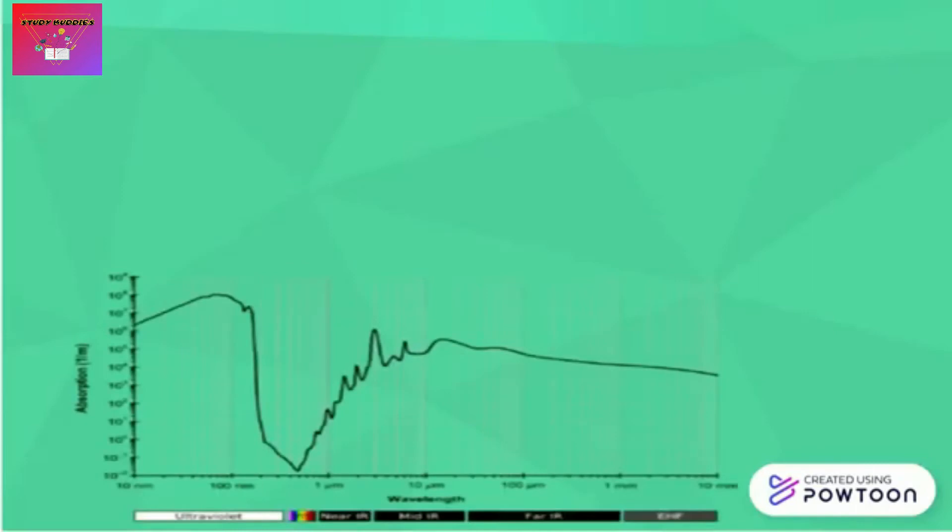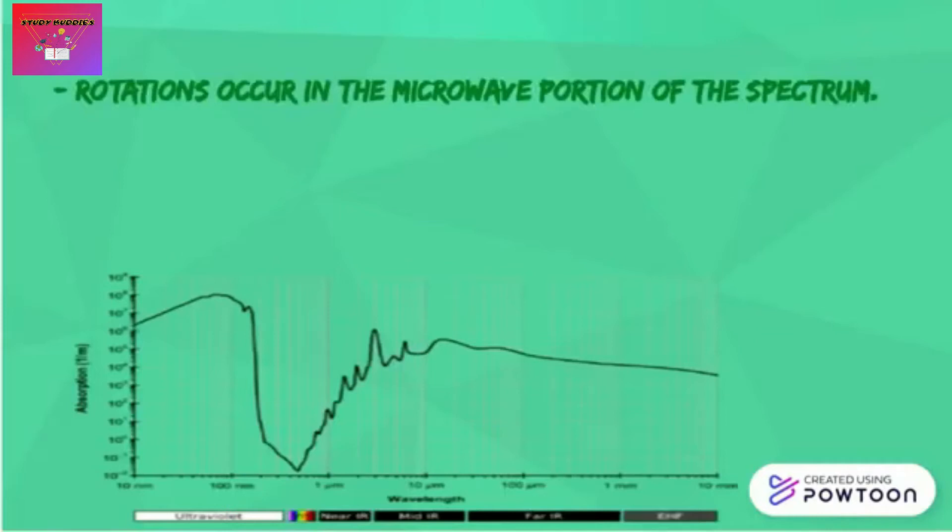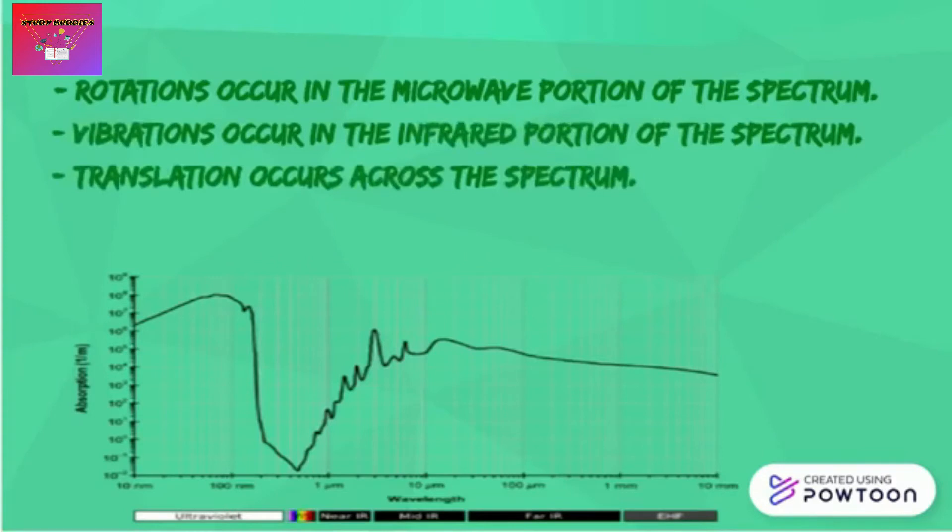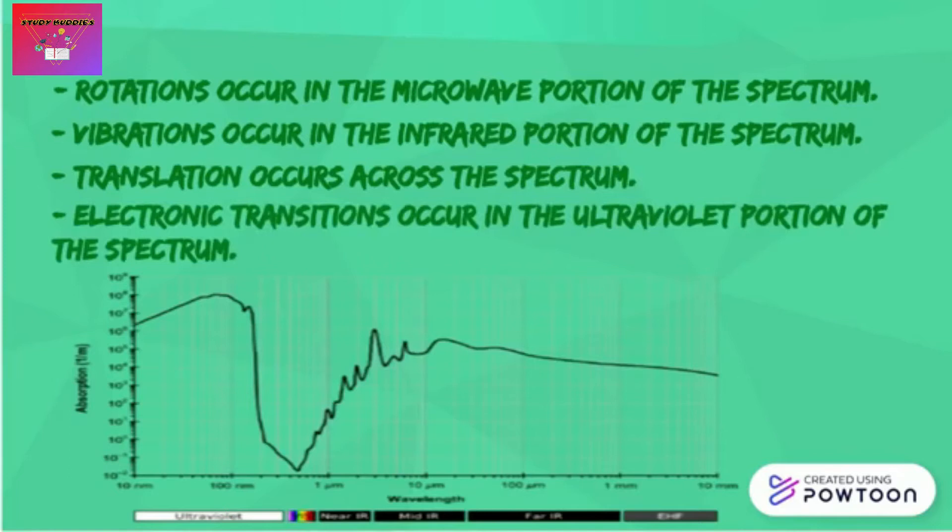Now let's analyze the water absorption spectrum. Rotations occur in the microwave portion of the spectrum, and vibrations occur in the infrared portion of the spectrum. Translation occurs across the spectrum, and electronic transitions occur in the ultraviolet portion of the spectrum.